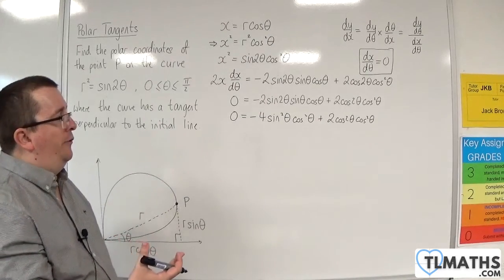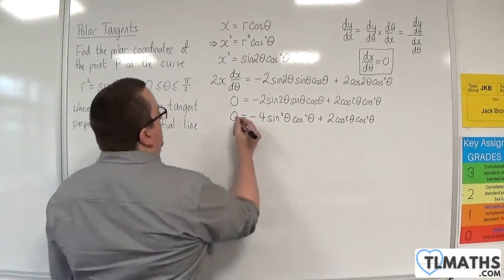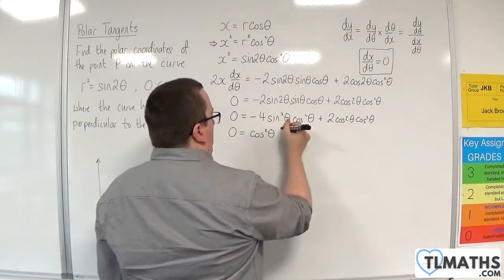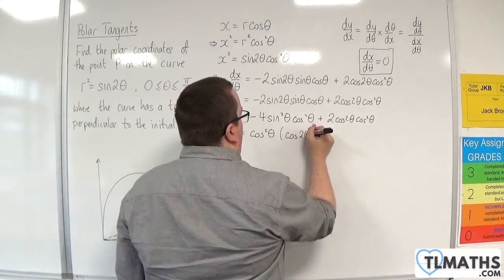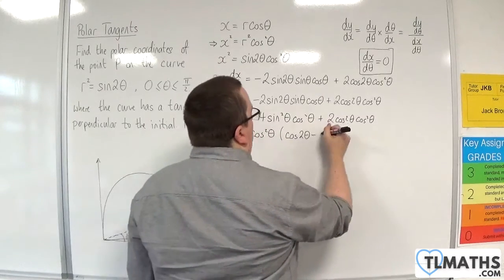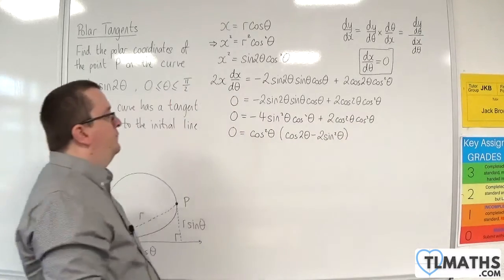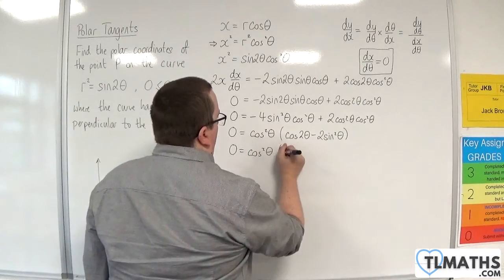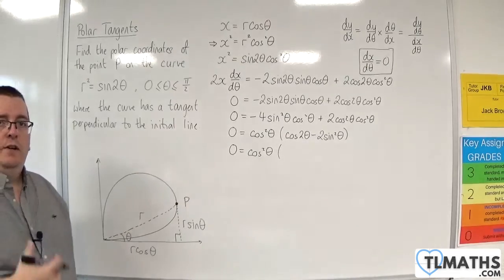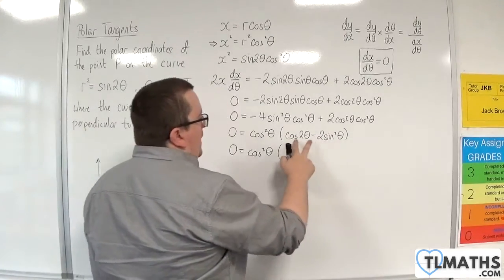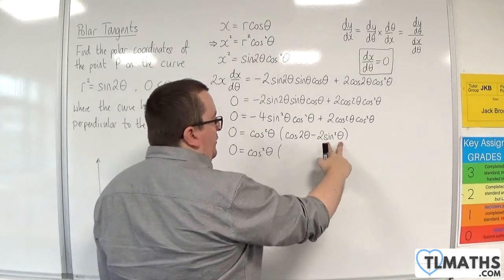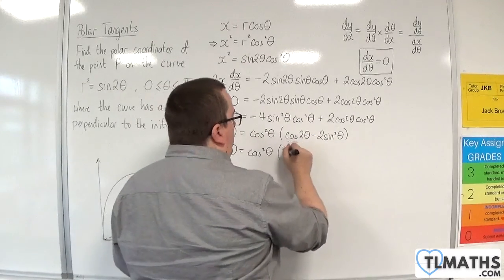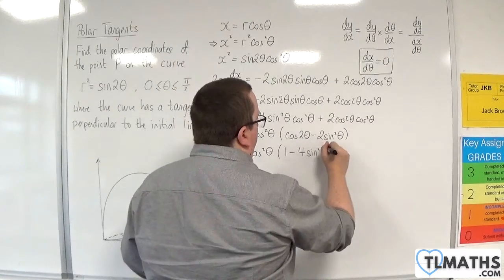Now I can factor out cos²θ and divide through by 2, giving: 0 = cos²θ (cos(2θ) − 2sin²θ). Now it's time to replace cos(2θ) using a double angle formula. It makes sense to use cos(2θ) = 1 − 2sin²θ, because I've already got −2sin²θ there. So I get: 0 = cos²θ (1 − 2sin²θ − 2sin²θ) = cos²θ (1 − 4sin²θ).